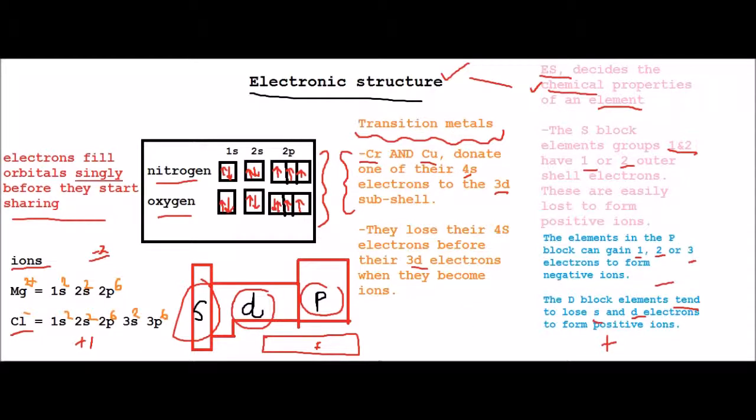The group 0, or you can call them inert gases or noble gases, have completely filled their S and P subshells and don't need to bother gaining or losing or sharing electrons because their full subshells make them inert.